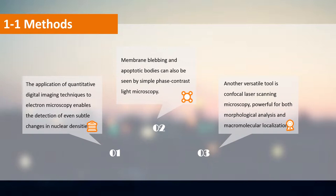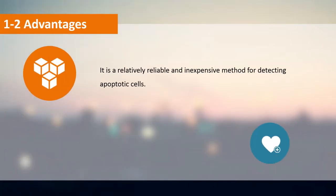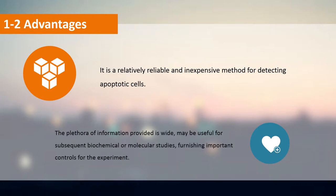Another versatile tool is confocal laser scanning microscopy, powerful for both morphological analysis and macromolecular localization. It is a relatively reliable and inexpensive method for detecting apoptotic cells. The plethora of information provided is wide and may be useful for subsequent biochemical or molecular studies, furnishing important controls for the experiment.